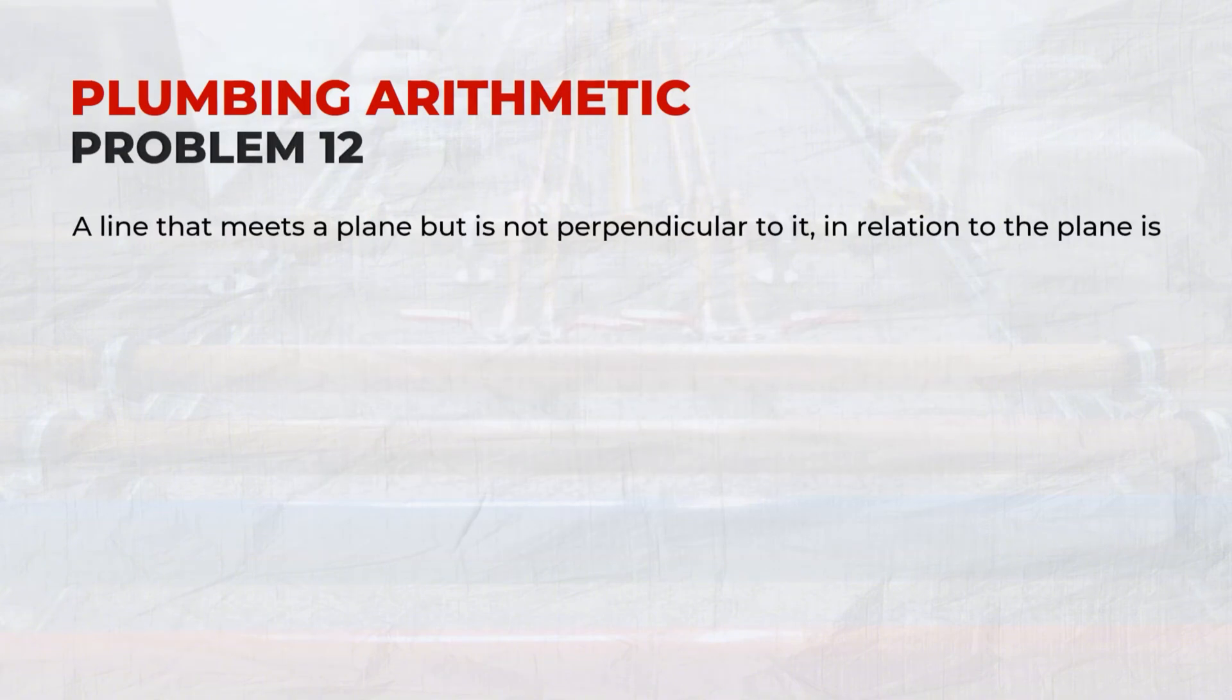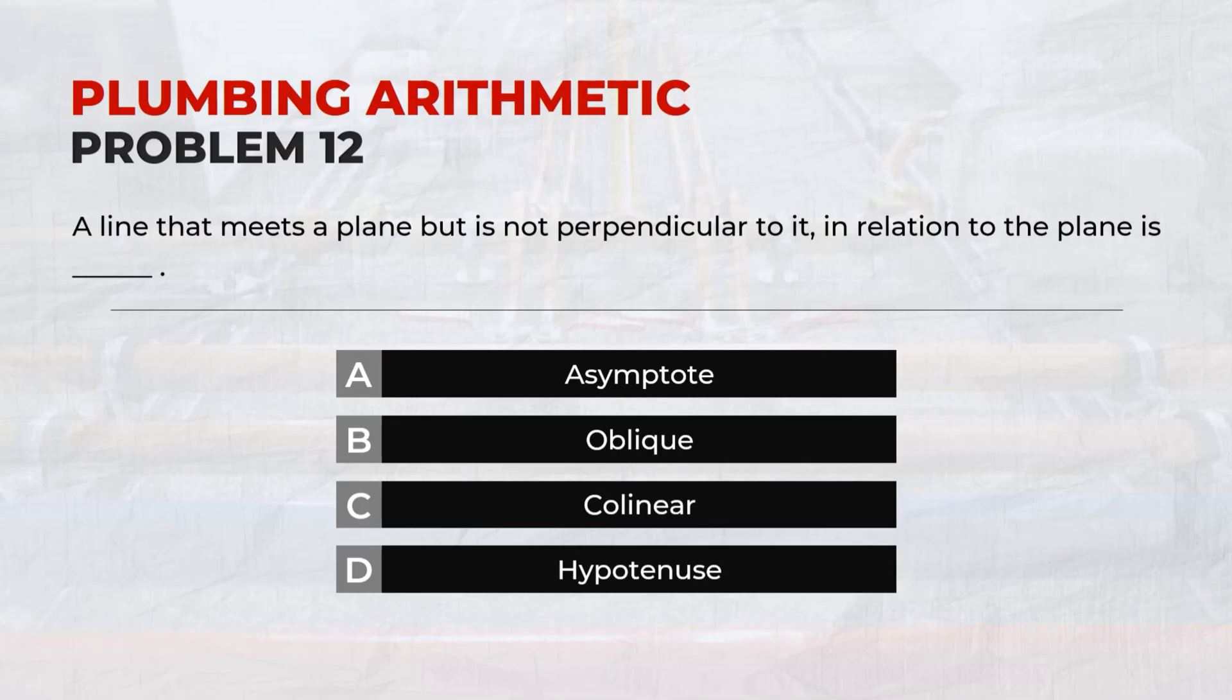Problem 12: A line that meets a plane, but is not perpendicular to it, in relation to the plane is? Answer: B, Oblique.